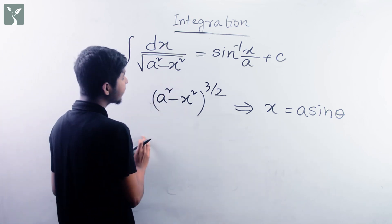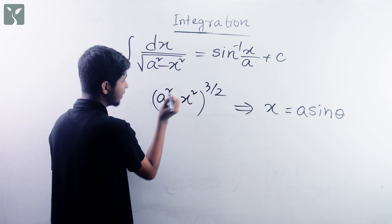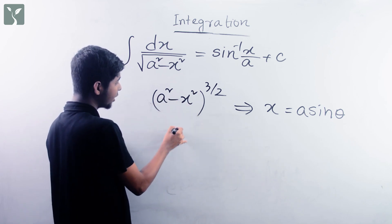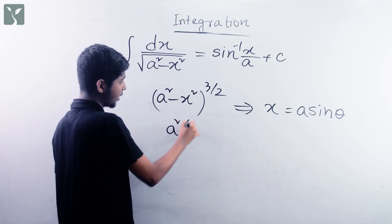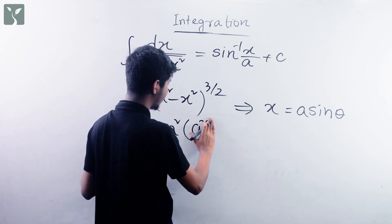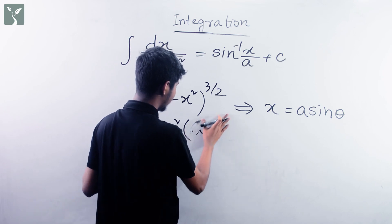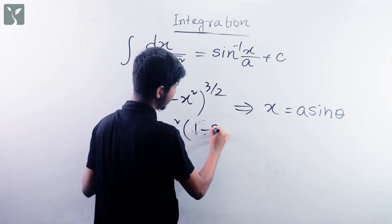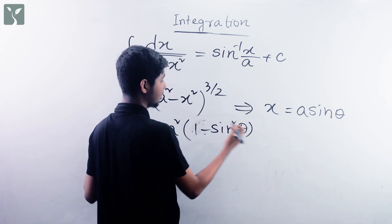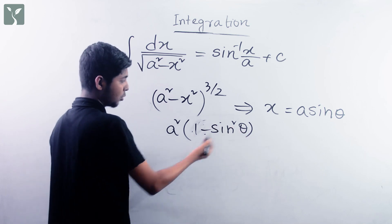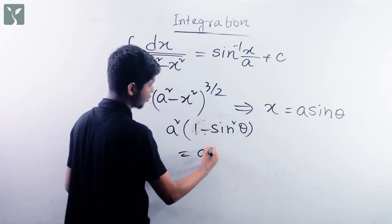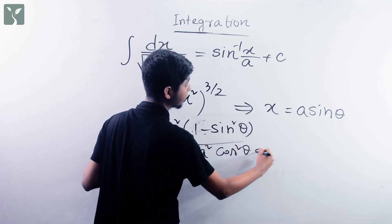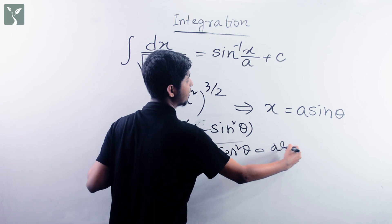Why do we do this? If we have a square root, we will see that a square root gives 1 minus sin squared theta, which is the formula of cos squared theta. So the root simplifies to a cos theta.